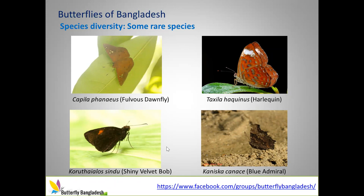Some rare butterflies have been recently recorded in this checklist. This is a shiny velvet bob and the blue admiral — frequently found in the Himalayas. We found two admiral individuals in 2018 in the same place.